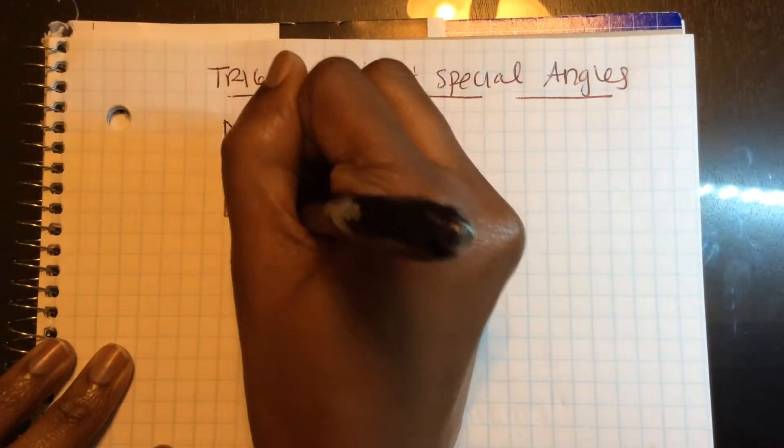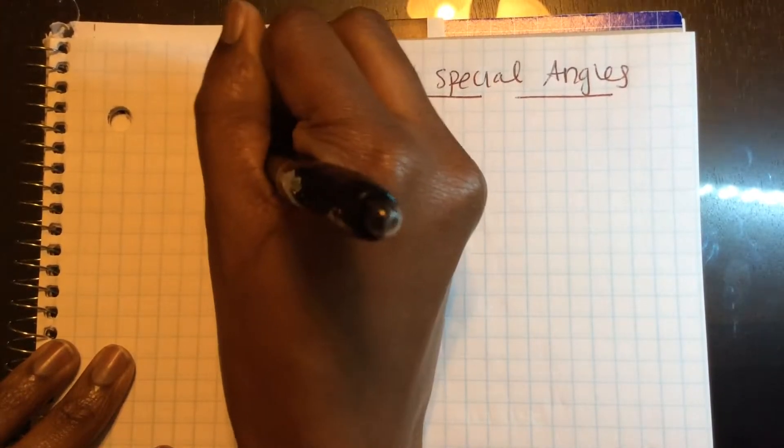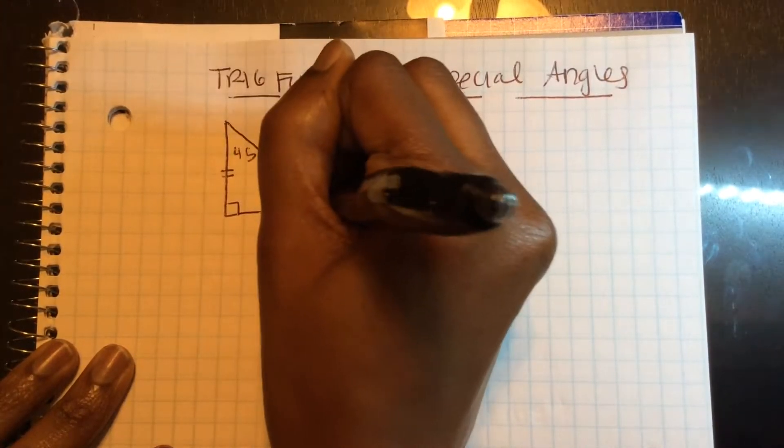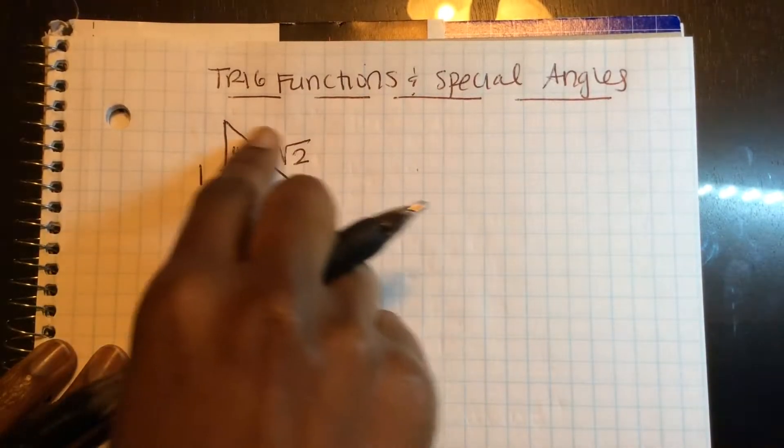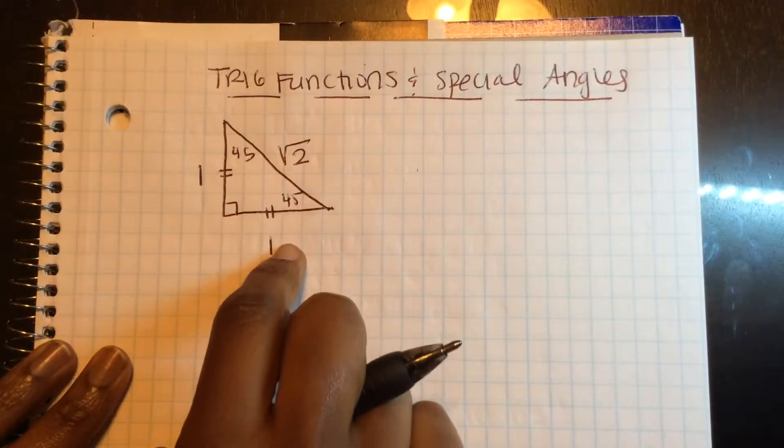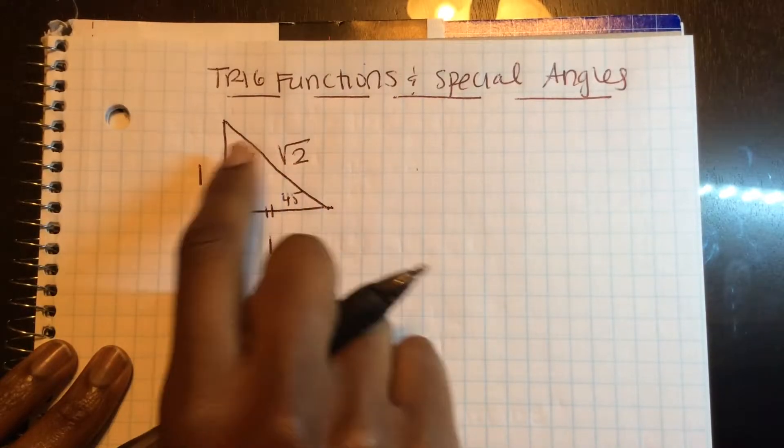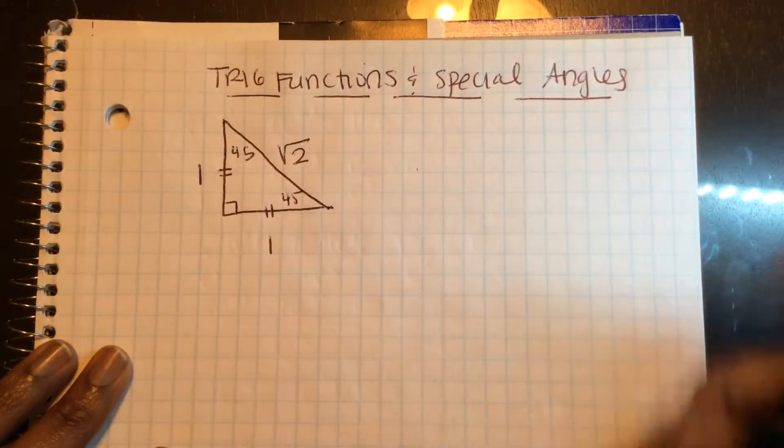So remember, in a 45-45-90 triangle, your two legs are the same. And if you do the Pythagorean theorem, this will be square root of 2. So if you remember the visual of this triangle, you should be able to calculate sine, cosine, or tangent of 45.